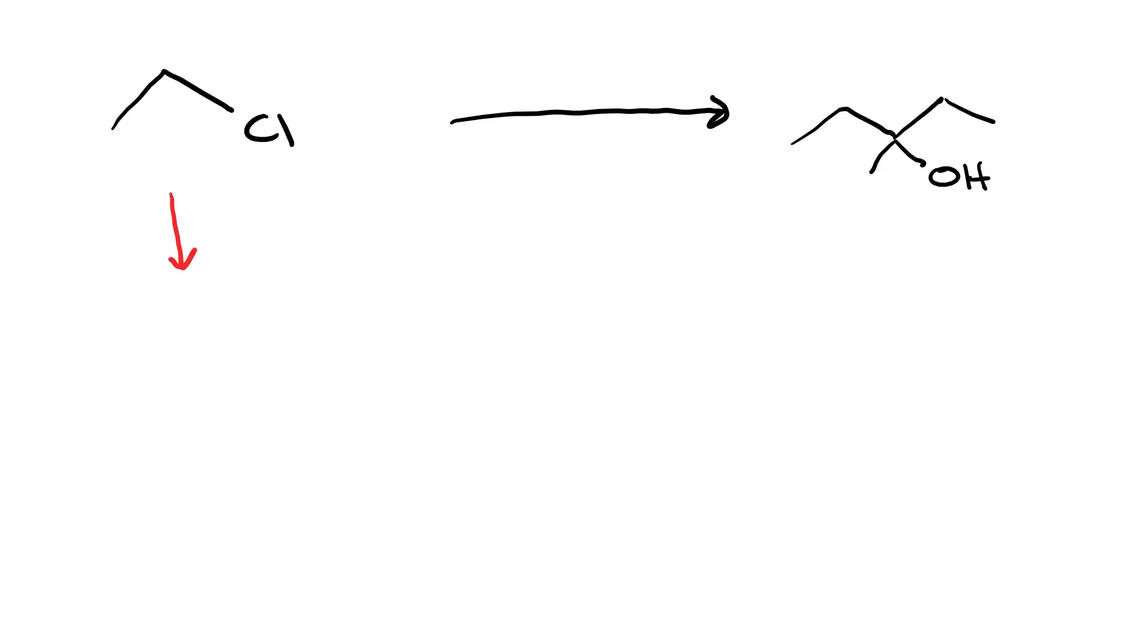First I'm going to make the Grignard reagent. So I react my ethyl chloride with magnesium and diethyl ether, and that gives me ethyl magnesium chloride.